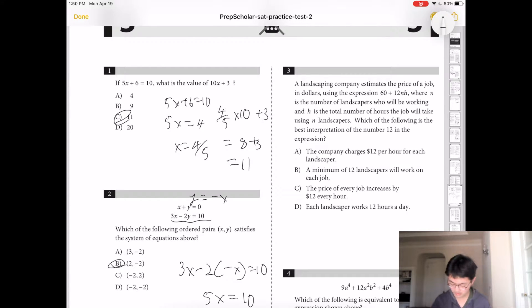Number 3, which of the following is the best interpretation of number 12? So number of landscapers times the number of hours times, it would be making $12 an hour. So the answer would be A.